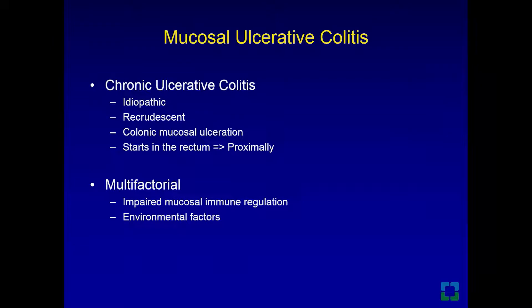Ulcerative colitis is an idiopathic recurrent inflammatory process of the colon. It affects the colonic mucosa mainly and starts in the rectum, spreading proximally. The etiology is multifactorial, including impaired mucosal immune regulation as well as environmental factors.